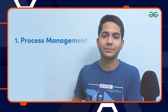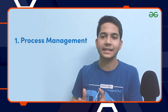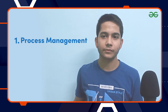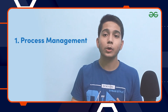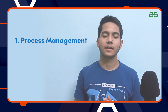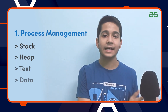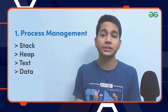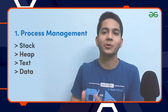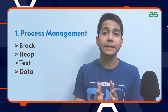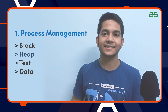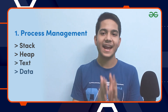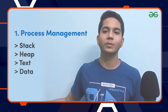The first concept is process management. A process is basically defined as a program in execution, and this process should be executed sequentially. When you write a computer program in a text file and execute it, it becomes a process in your system. A process has four sections: stack, heap, text, and data. Stack is responsible for storing temporary data like function or method parameters, return addresses, and local variables. The heap section allocates dynamic memory to the process during its runtime. The text section includes the current activity represented by the values of the program. The data section stores all the local and global variables.